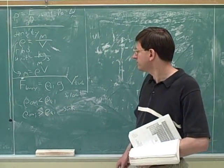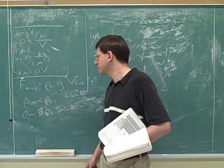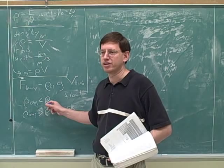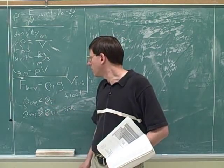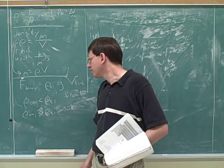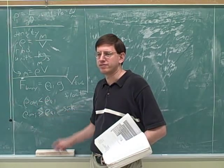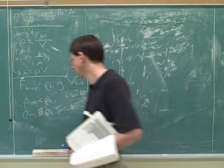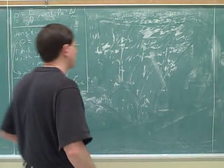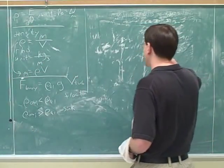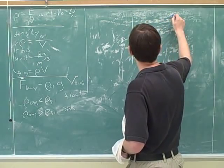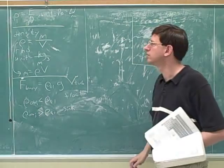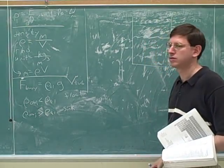Now this should seem intuitive, but one thing you notice is how simple this is. For example, the volume of the object does not directly matter, and even g does not directly matter. All that directly matters are the relative densities.